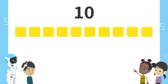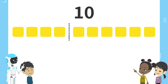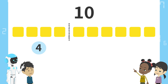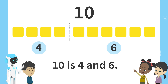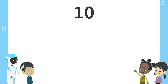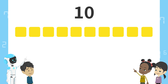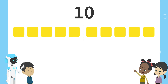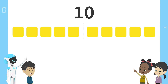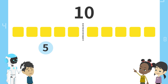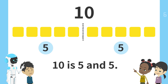Next, here. Four blocks on the left and six blocks on the right. Ten is four and six. Next, here. Five blocks on the left and five blocks on the right. Ten is five and five.